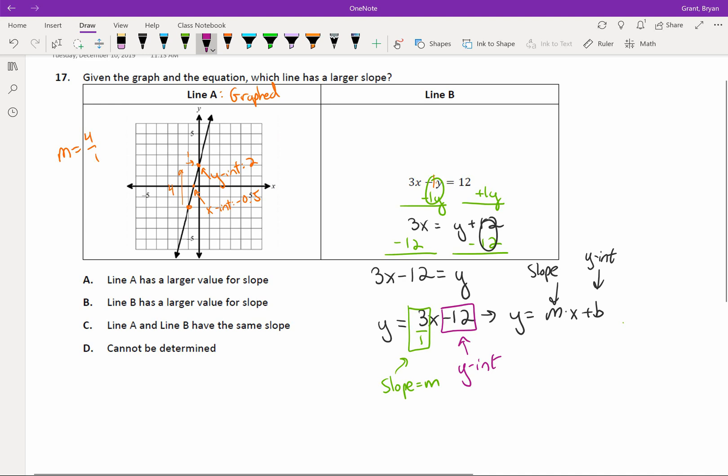Now, what is this problem even asking us to do? Well, they say, does line A have a larger value for the slope? Line A had a slope of 4 over 1. Line B had a slope of 3 over 1. So, I think A does have a larger slope. That's seeming like a good option. Does line B have a larger slope? No, 3 is smaller than 4. Do line A and B have the same slope? No. Can we determine the slope? Yes. It definitely is A.